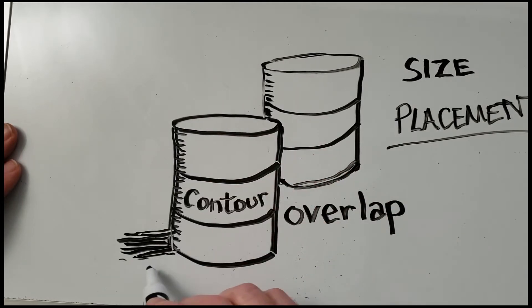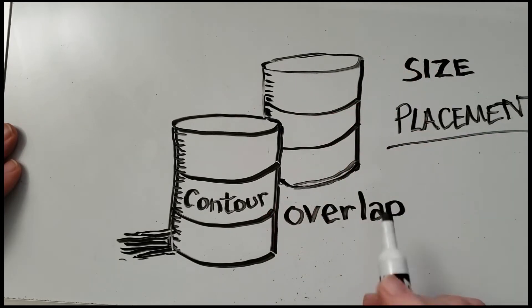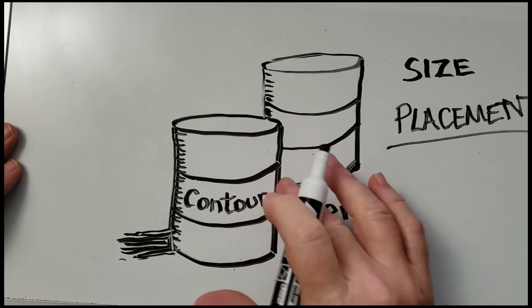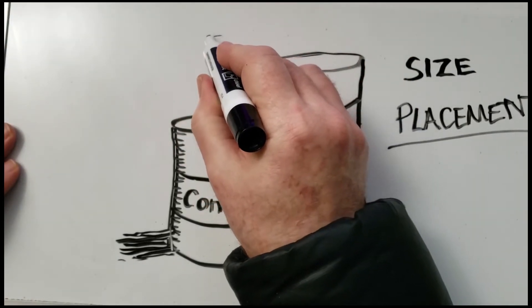So we've already got seven words up here. We have foreshortening, contour, shade, shadow, placement, size, and overlap.